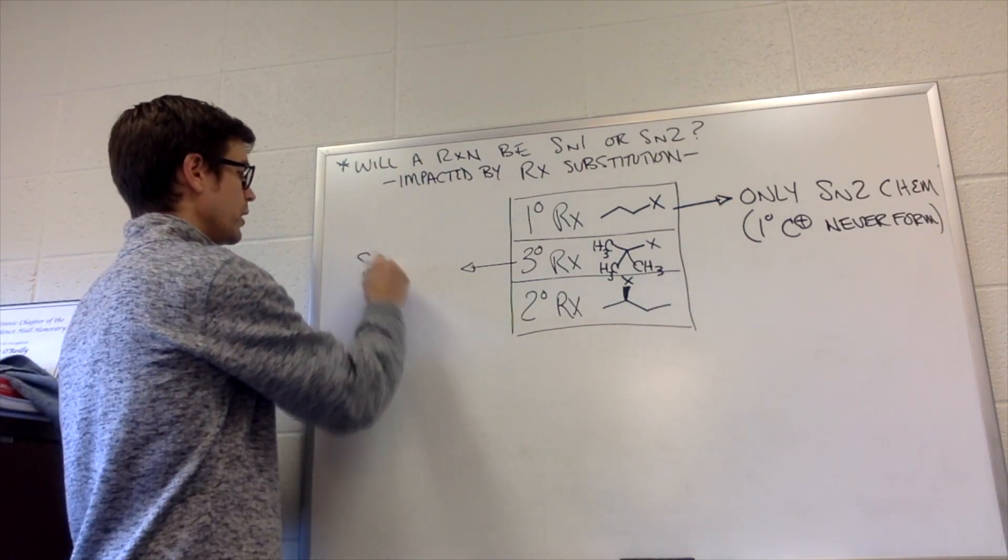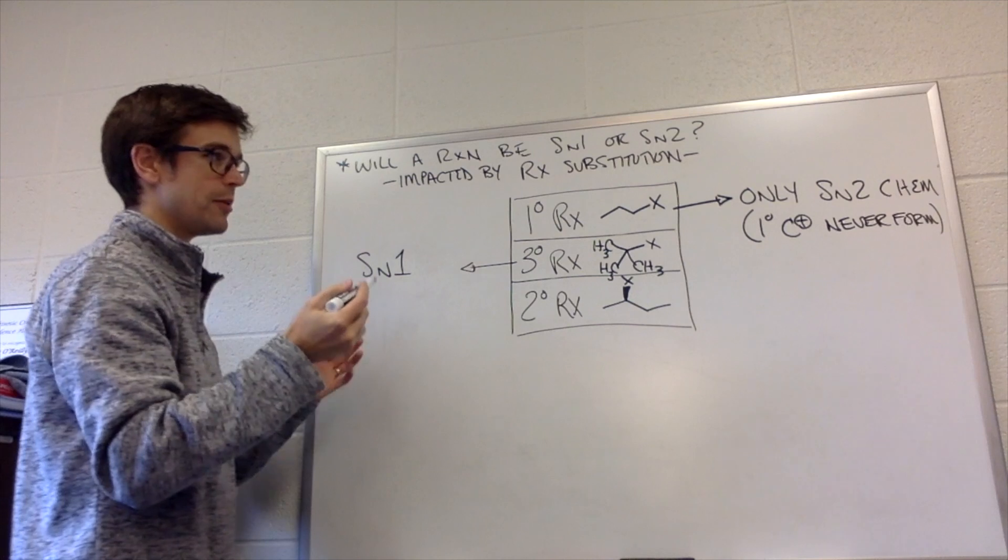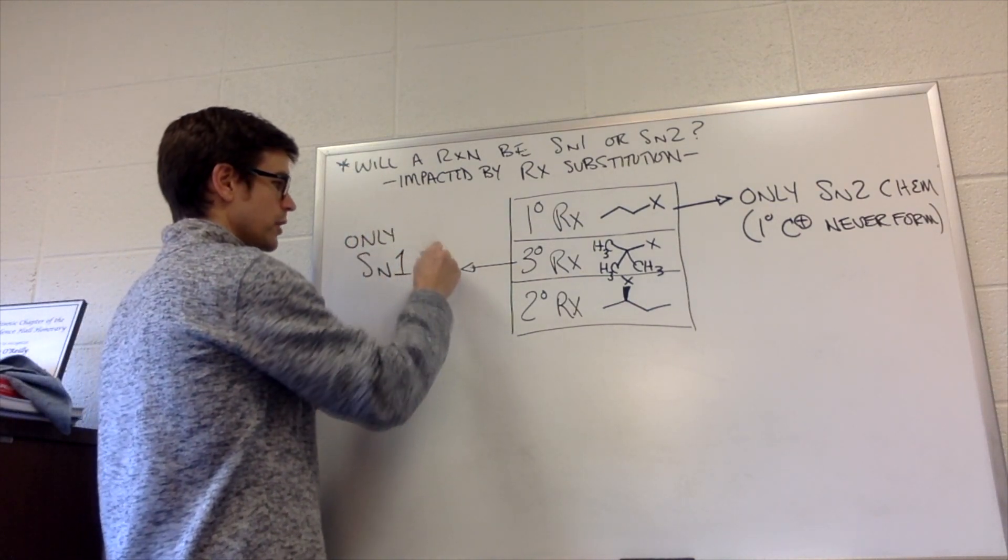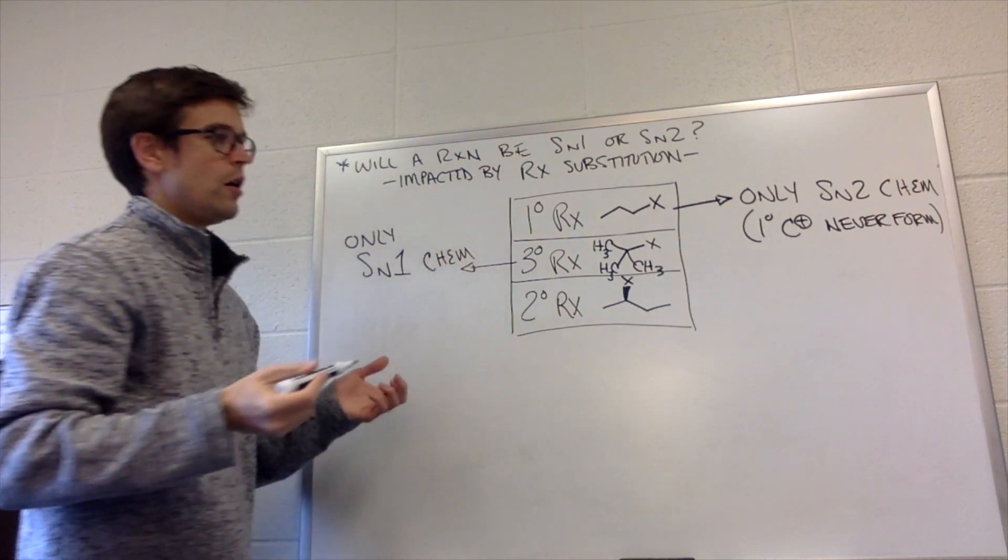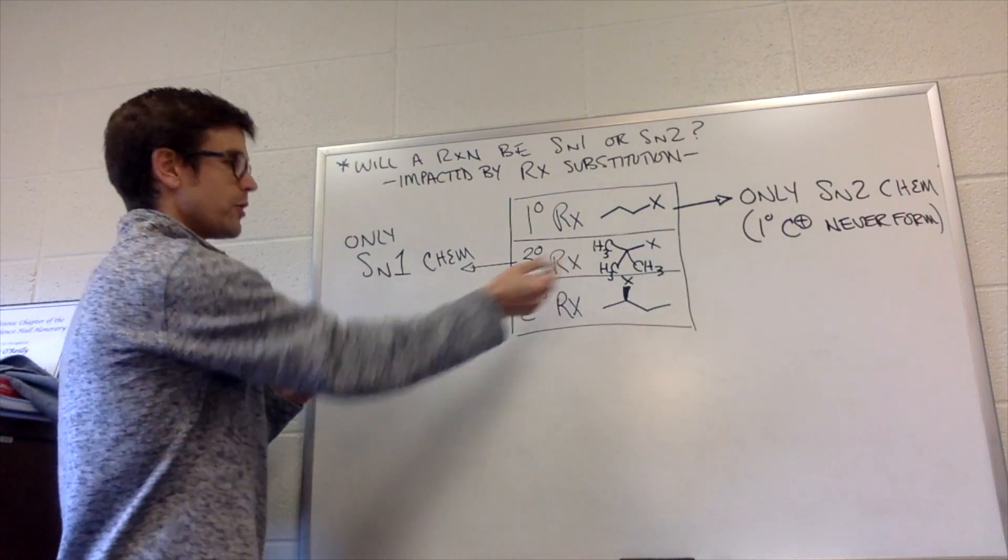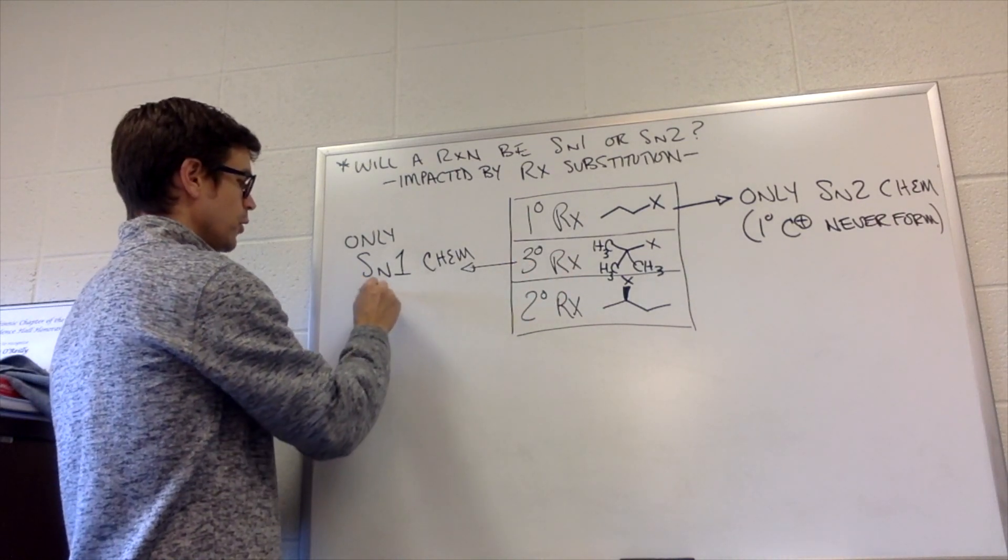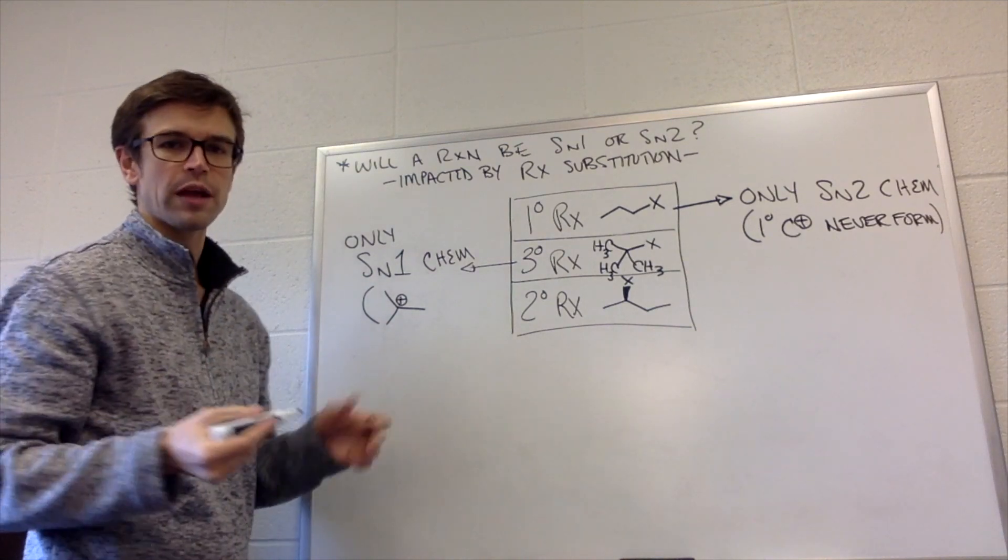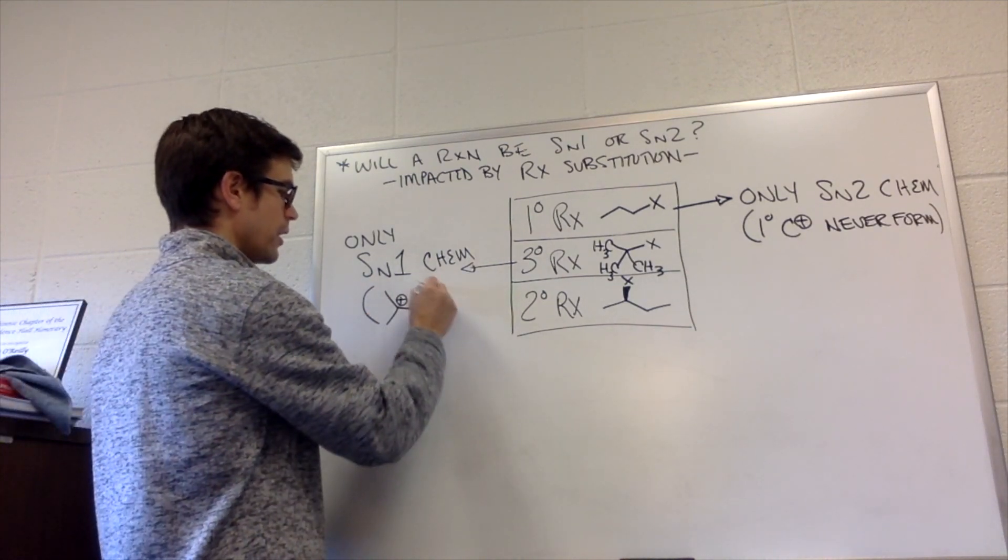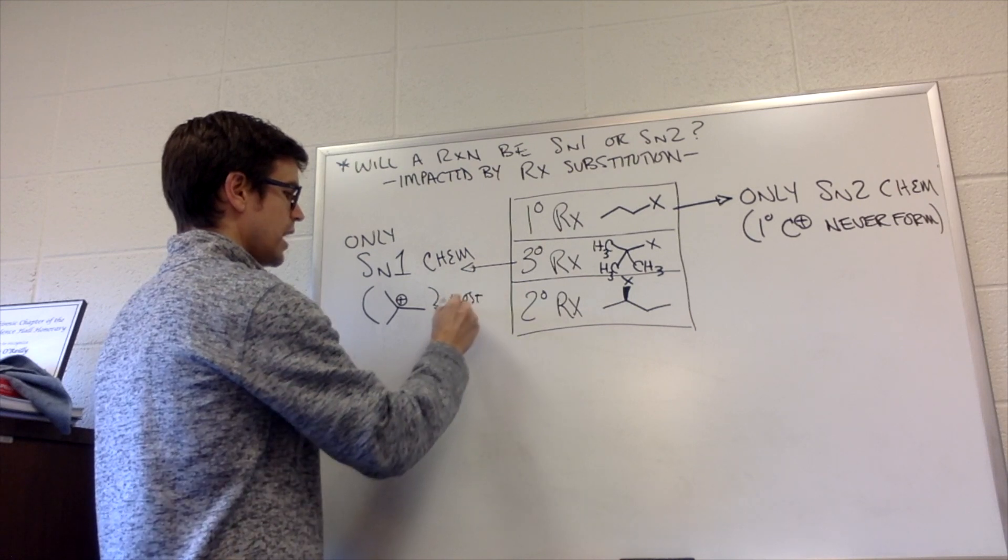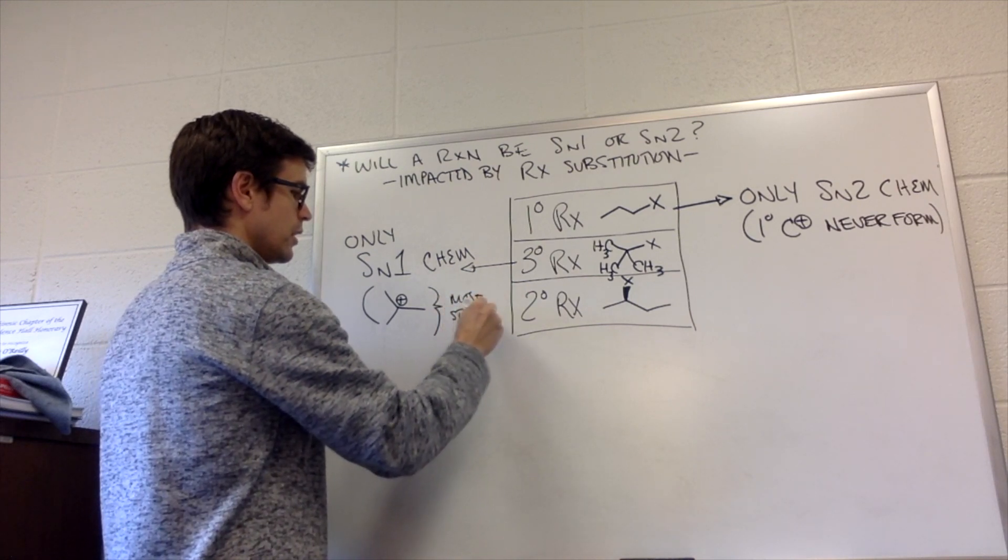So it will be only SN1 chemistry. So yeah, only SN1 chemistry. Also, why is SN1 chemistry so favorable with this tertiary system? It's so favorable because we form the most stable type of carbocation, a tertiary carbocation. And that carbocation is the most stable type.